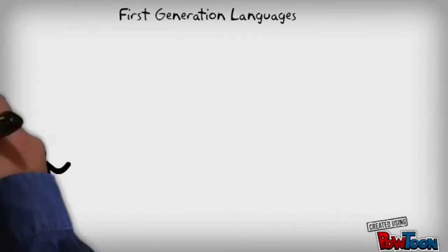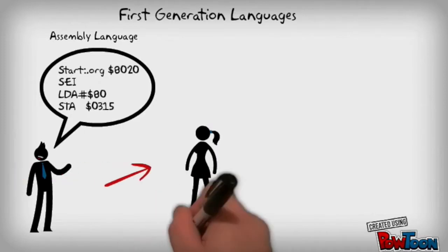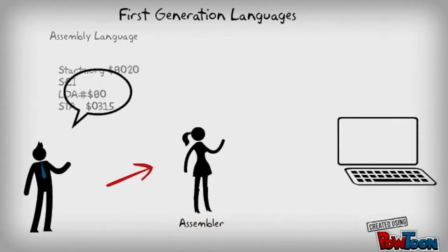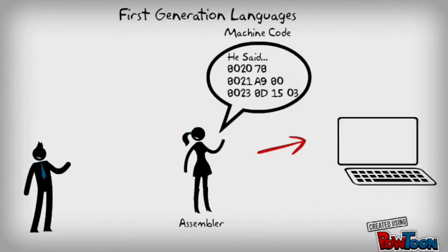So in order to make things easier for ourselves, we tried creating what we call first-generation languages, like assembly language. And this allowed us to type it out the way we wanted it, and we would send it to this thing called an assembler, who would convert it to this awful language that we didn't want to speak. And then the computer would understand us.